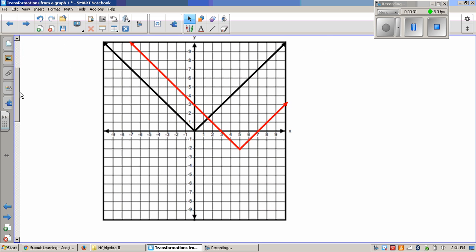Remember, we've got translation, reflection, and dilation are just the three main basic transformations that we're going to be focusing on here. If I look at these two graphs, the black one's where I start, the red one's where I end up.